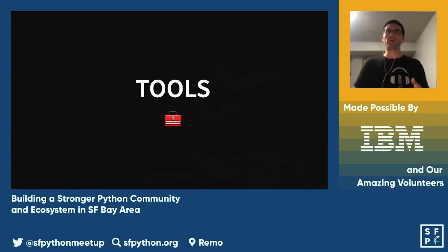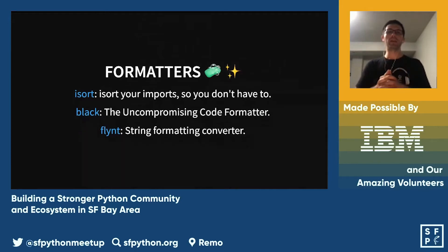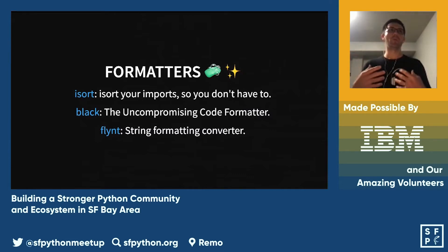First we're going to talk about tools — we have formatters and linters mostly. The formatters will make modifications to your code, so make sure you save your changes and if you use git, make sure you stage your changes before you run those tools so that you can easily see the diff of what has been applied.